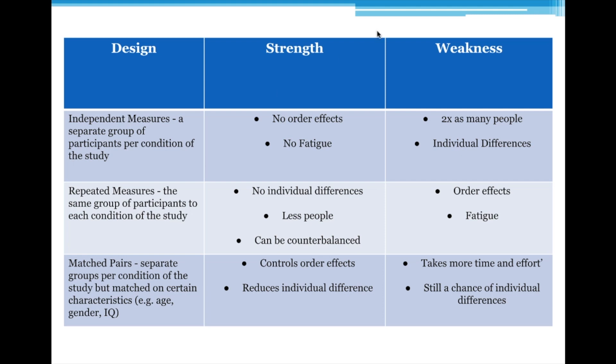So now you know what the three different designs are, you're less likely to be asked 'what is a repeated measures design?' The way you generally get assessed on this is being able to identify it and apply it. So for AO2, you might get given a stem, a scenario question, a hypothetical study, and asked to identify the design being used. You need to look at whether the participants are taking part in all conditions of the study. Or you'll be asked to evaluate — is this a good method to use? And to do that, you need to know the strengths and weaknesses of these different designs.